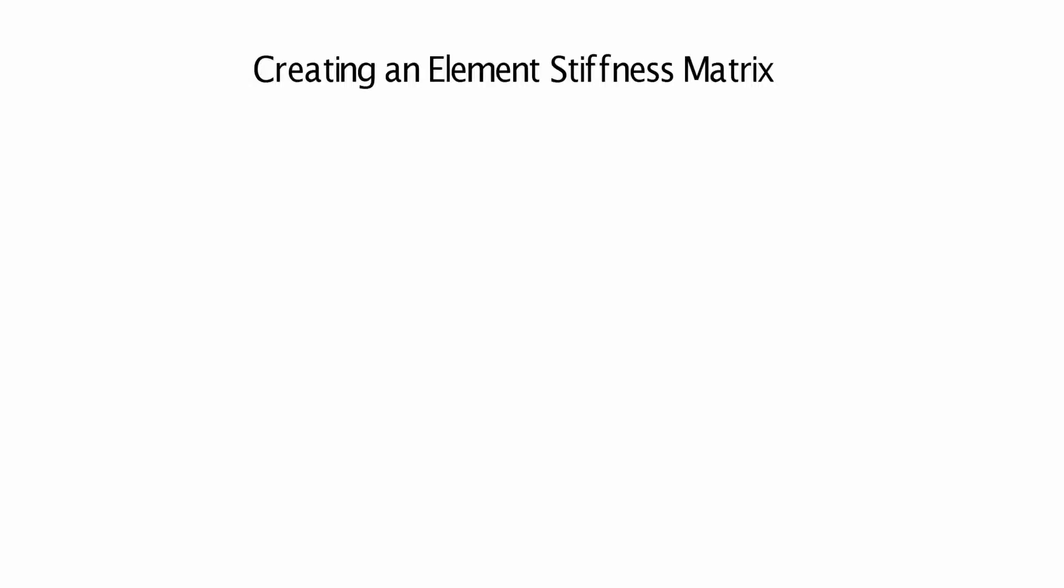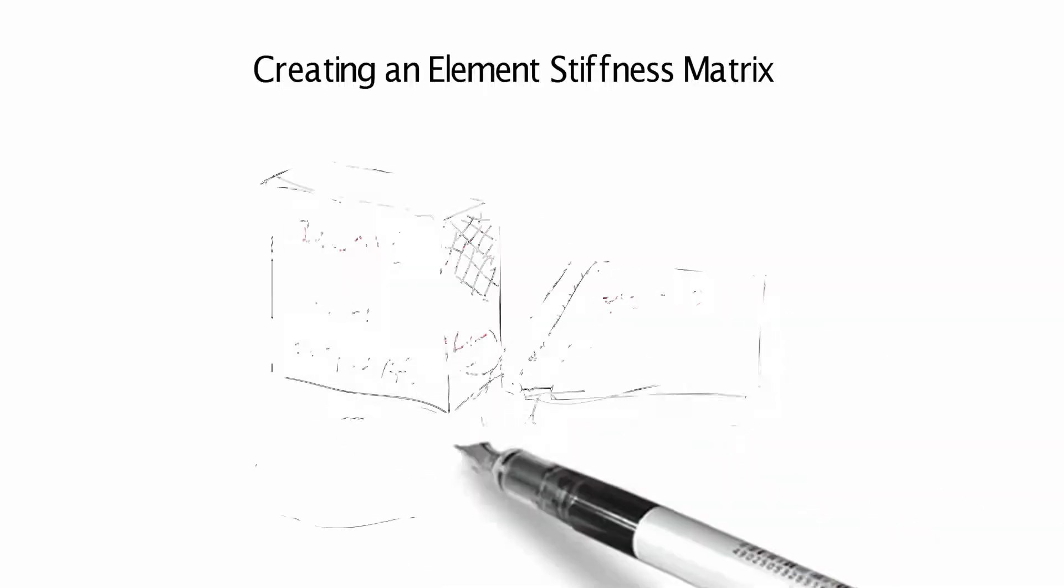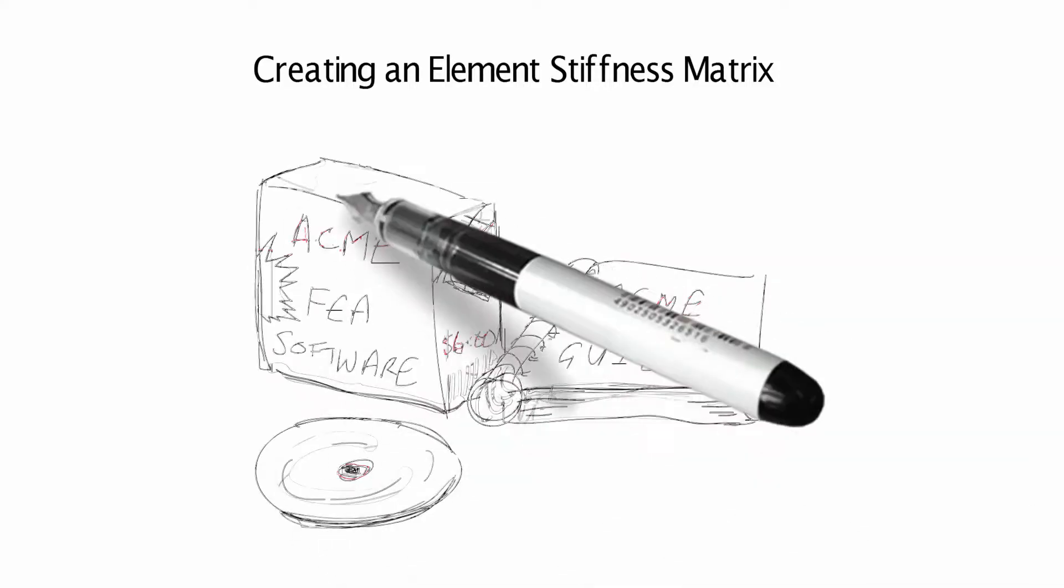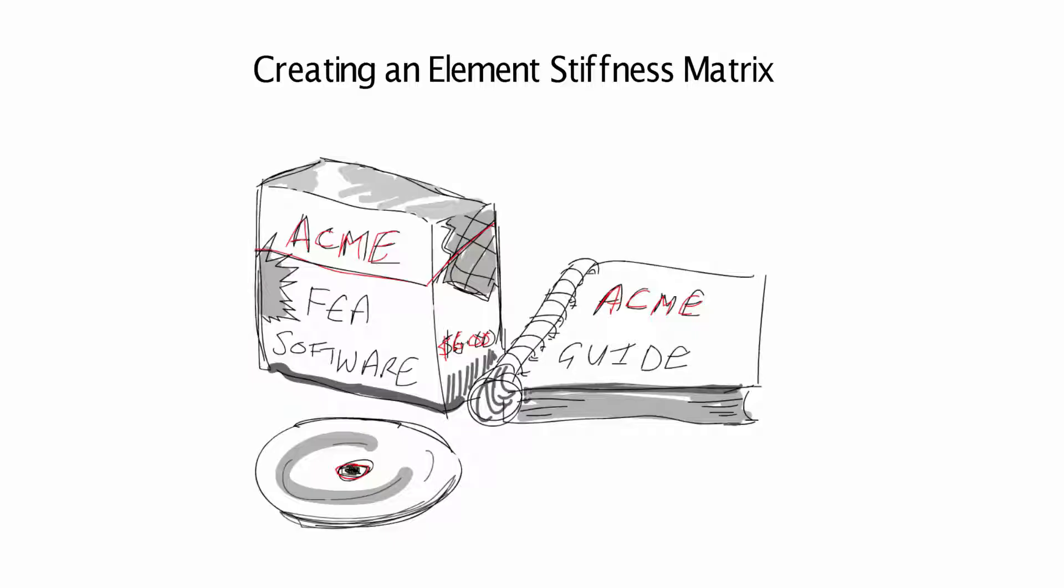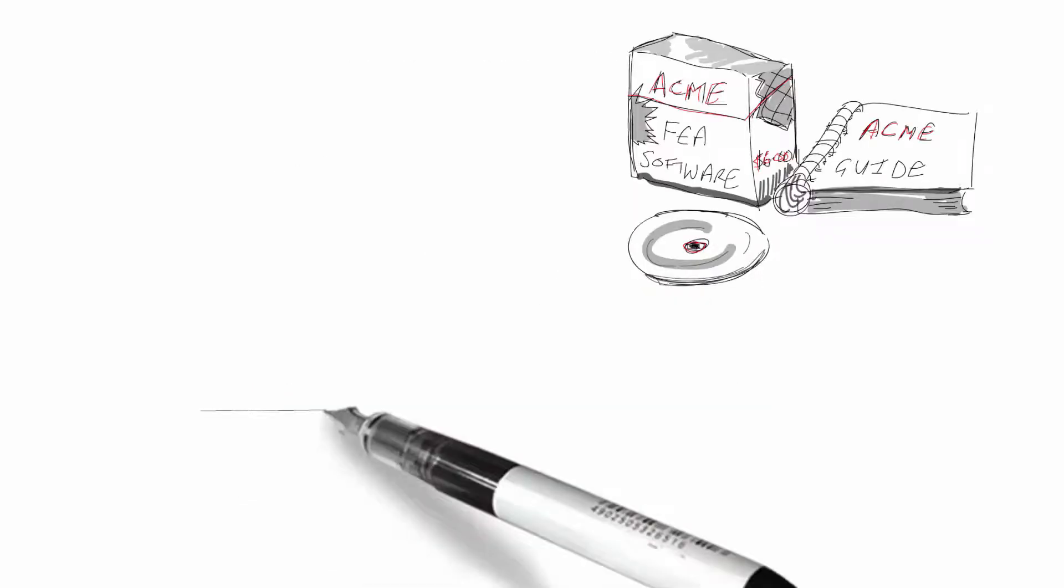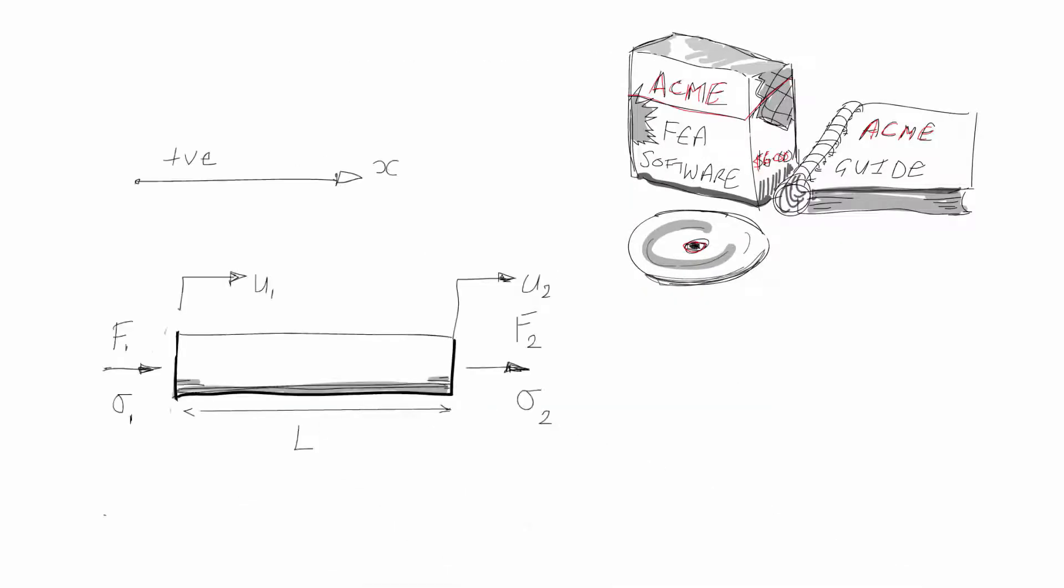This video is about creating an element stiffness matrix. Imagine we're a software company, ACME FEA. By the way, I have made that name up. The first task is to design the rod element. Well, it's not very ambitious, but we all have to start somewhere. So here is the rod element. As you can see, it's very similar to the rod we've been looking at in the previous videos.